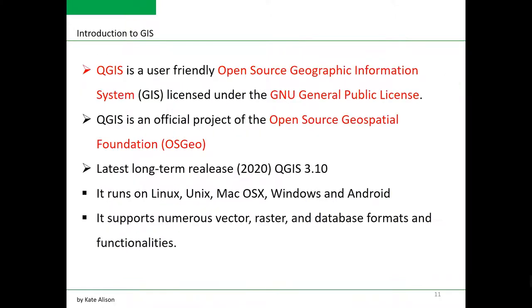QGIS is a user-friendly open source geographic information system licensed under the GNU General Public License. It is an official project of the Open Source Geospatial Foundation. Its latest long-term release in 2020 is QGIS 3.10, the version we are going to work with.